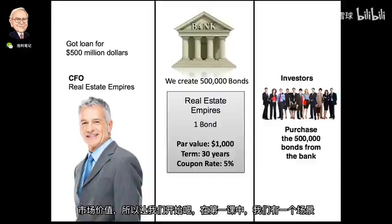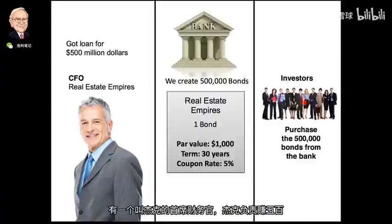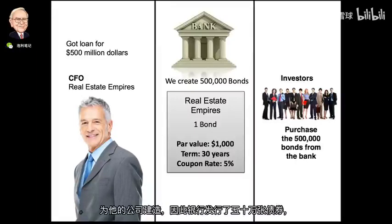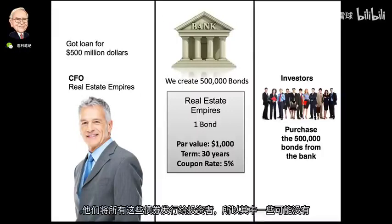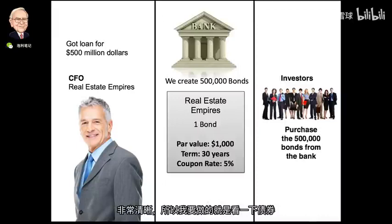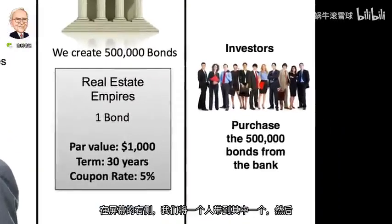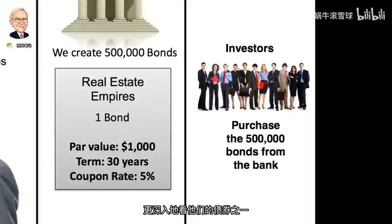In lesson one, we had a scenario where we had a CFO named Jack, who was responsible for getting a $500 million dollar loan from the bank in order to build a new headquarters building for his company. The bank created five hundred thousand bonds and issued them to investors. So what I'm going to do is look at the bonds from the investor's standpoint and look at one of their bonds more in depth.